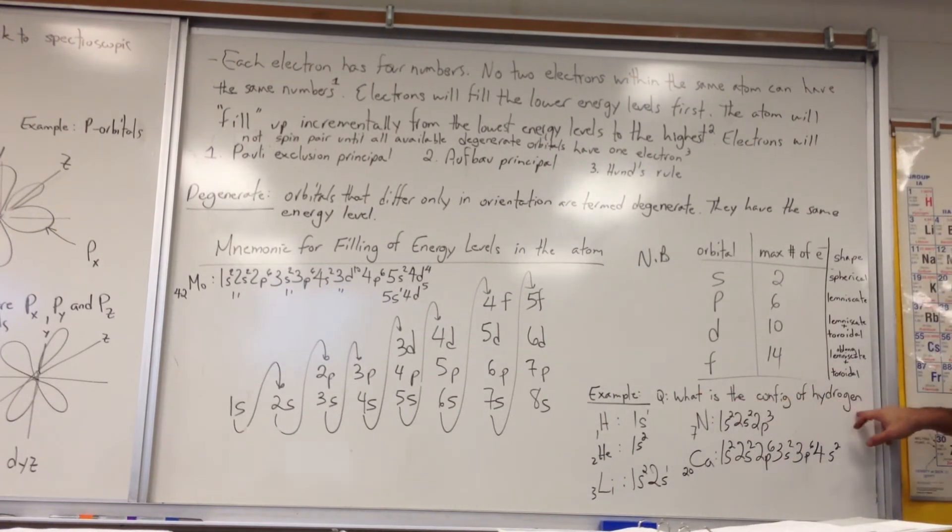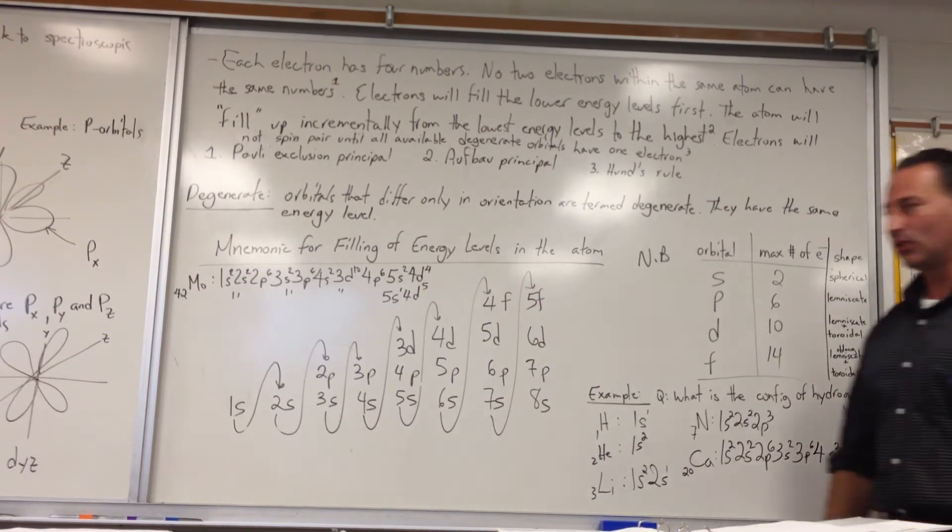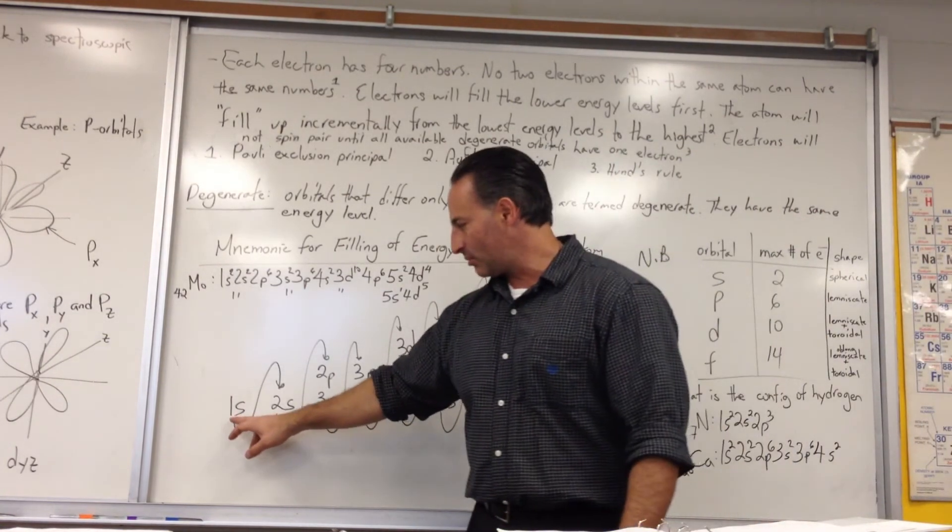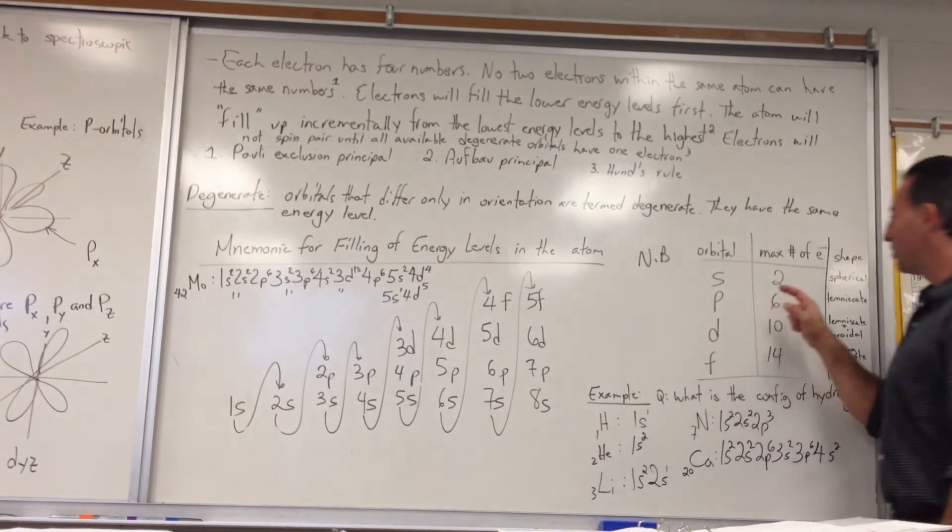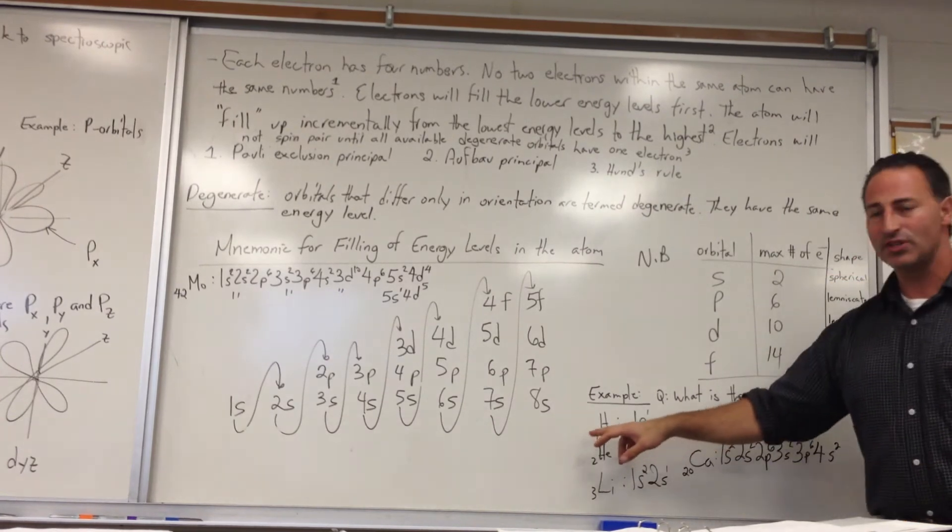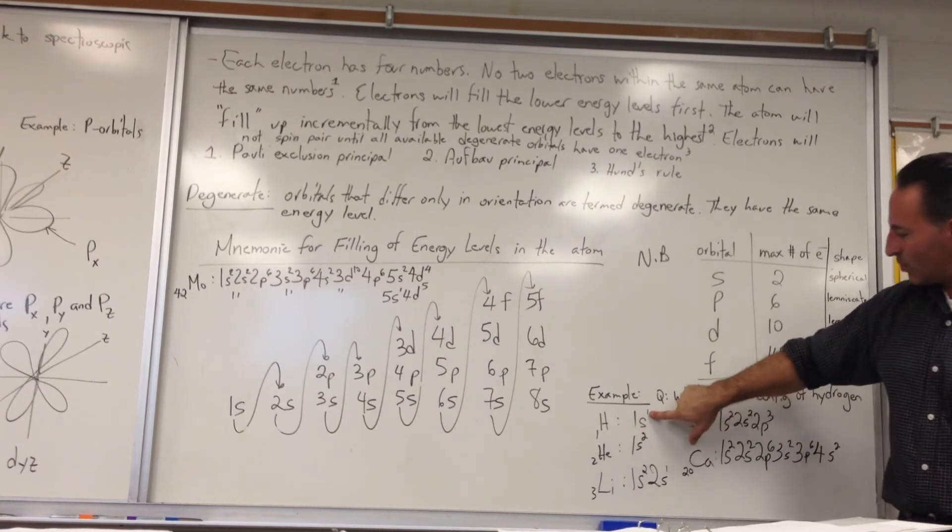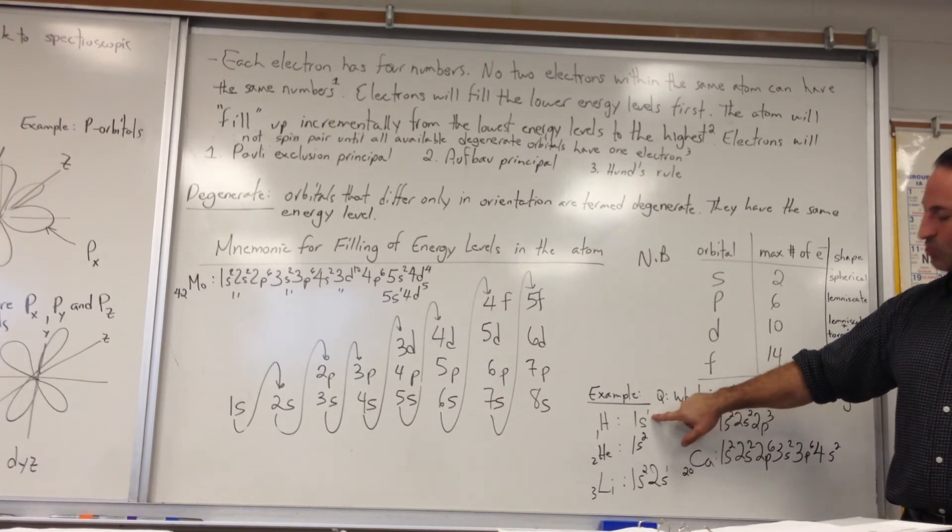I ask, what is the configuration of hydrogen? Hydrogen has one proton, and therefore, if it's a neutral hydrogen atom, we'll also have one electron. The lowest energy level that's available is the 1S level. The maximum number of electrons the level can hold is 2, so the configuration of hydrogen will be 1S with one electron, so you put a superscripted 1 next to the S. So it's 1S1.